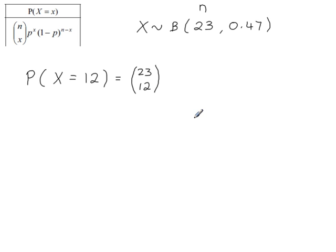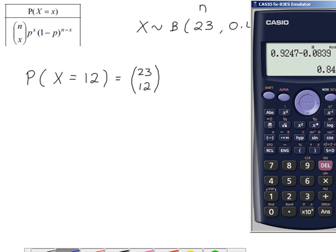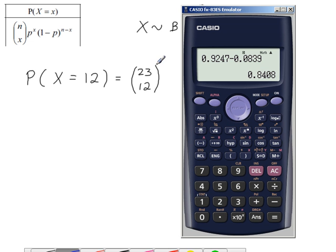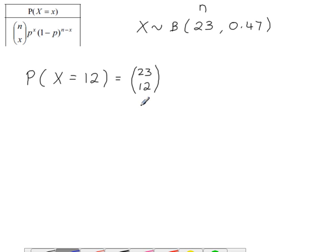On your calculator, this is entered as 23, and then shift, and then you want this NCR function. So 23C12 - that's this part here. This on your calculator is 23C12.